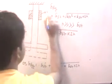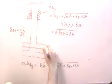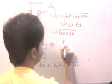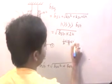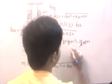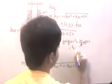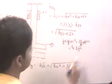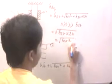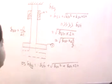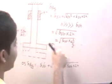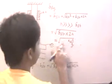Here, H can be related to velocity: the potential energy WH is fully converted to kinetic energy at the point of impact, so half times (W/G) times V squared equals W times H, which gives V squared equals 2GH, or 2H equals V squared by G. Therefore, delta_dy equals the square root of (delta_st times V squared by G). Delta_st can again be substituted as WL by AE.